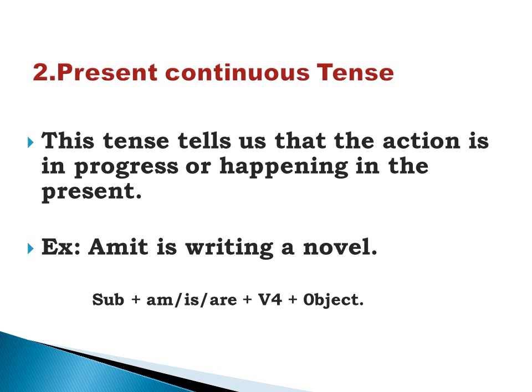Present continuous tense tells us that the action is in progress or happening in the present. Example: Amit is writing a novel — the action of writing is going on in the present. The formula is: subject + is/am/are + V4 (ing form) + object. We always use the ing form, the V4 form, in continuous tenses, whether it is present continuous, past continuous, or future continuous.